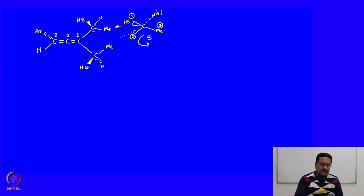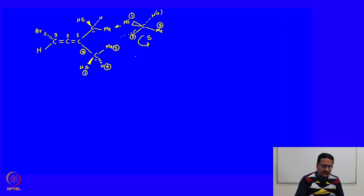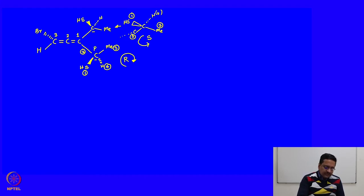In the same way, on the other carbon: this has priority 1, this back group has priority 2, this has priority 3, and the hydrogen has priority 4. For this carbon, if we go from 1 to 2 to 3 we see that it is clockwise. So it must be R. The absolute configuration of this centre is R and that top centre is S.